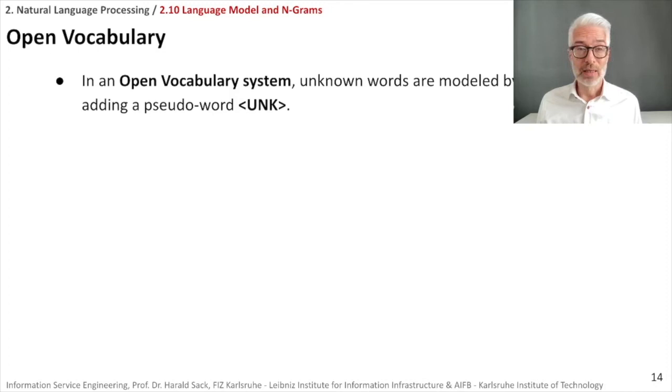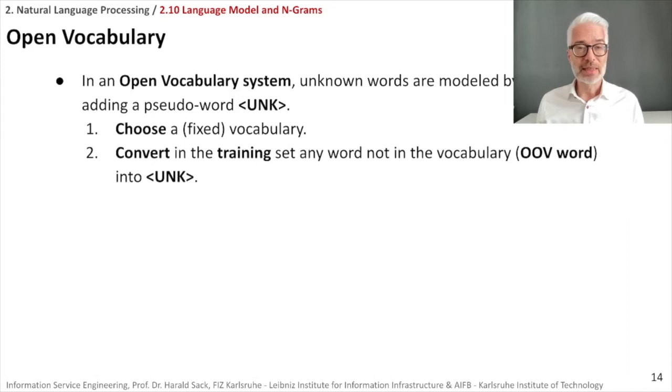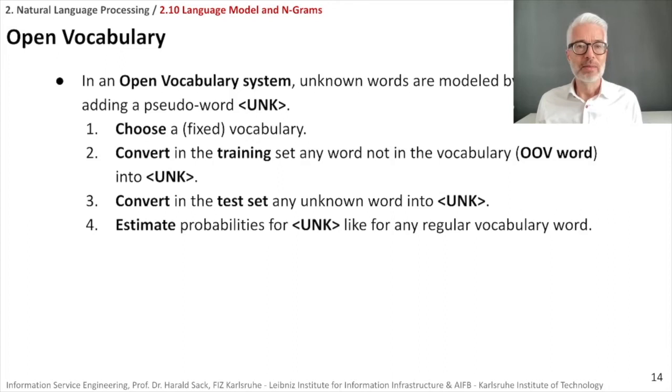So what are we going to do in an open vocabulary world? In an open vocabulary system, unknown words are simply modeled by adding a pseudo word unknown. I start with choosing a fixed vocabulary. Now I have a training set and every word that is in my training set that does not occur in the fixed vocabulary, I mark as out of vocabulary as unknown word. I do exactly the same in the test set. And I estimate the probabilities for the unknown words simply like for any regular word. However, since all of the unknown words, if they occur frequently, they might get a rather high probability in the end. So this doesn't help us any further. At least it only helps us a bit further. And this is, of course, not a totally correct solution.